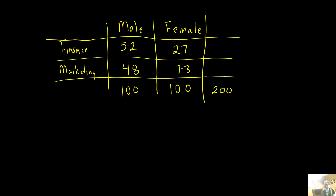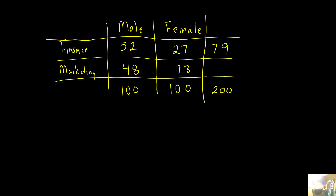I polled the class — I got all the men together and said, how many of you are studying finance? And 52 said they are. I asked the females, 27 said finance. So that would be 79. Then I came back and asked the guys, how many of you are in marketing? And how many of you females are in marketing? And I get 48 plus 73, and I get 121.